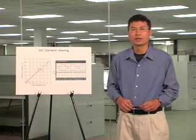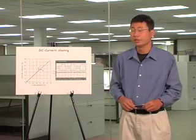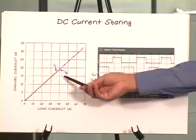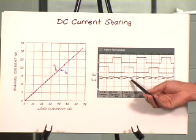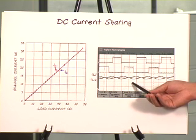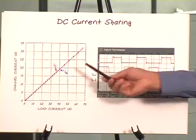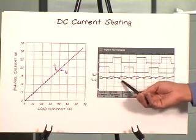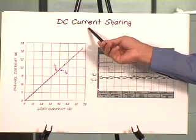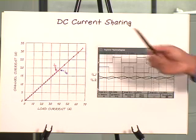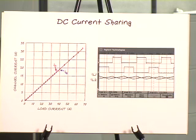Regardless of voltage mode or current mode control, if you open a vendor datasheet, you usually see very good current sharing curves or waveforms showing profile matching between channels. However, what I want to remind you today is that these nice current sharing curves are only for DC or steady-state conditions. What vendors don't show you is the dynamic current sharing under transients such as power up, power down, load step, or short circuit conditions. Current sharing under those conditions is important, and that's something I want to show you today.